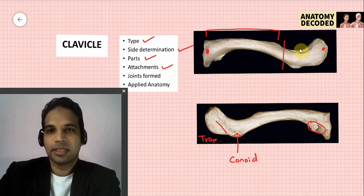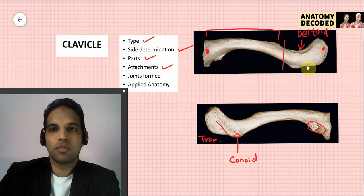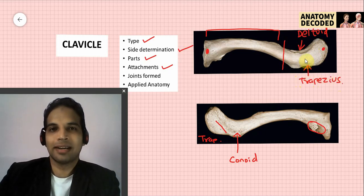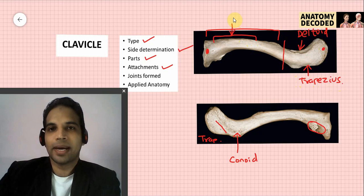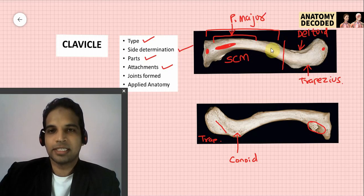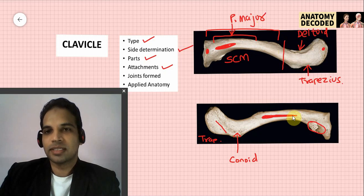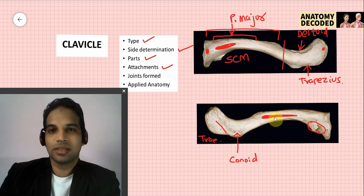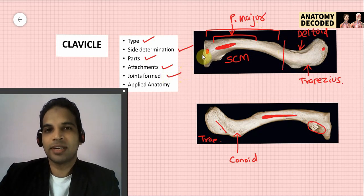The anterior border of the lateral one-third gives attachment to the deltoid muscle, and the posterior border gives attachment to trapezius. Along the medial two-thirds, the anterior surface gives attachment to pectoralis major, and the superior surface gives attachment to sternocleidomastoid. In the subclavian groove, the muscle is subclavius.